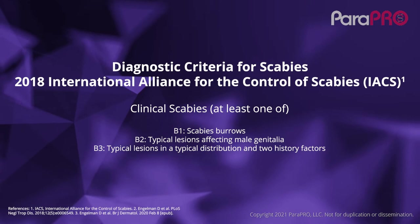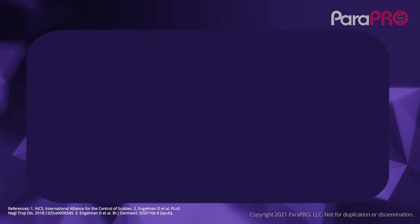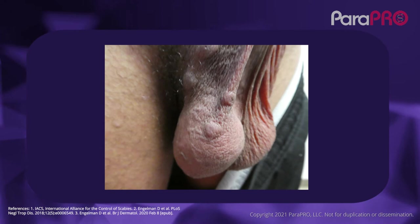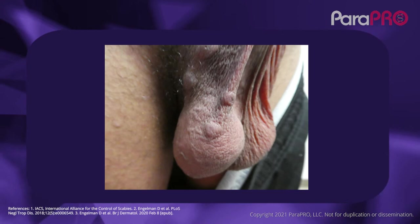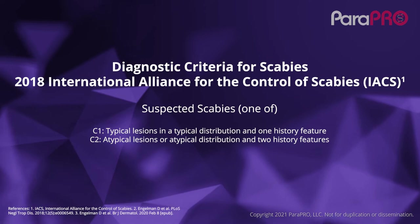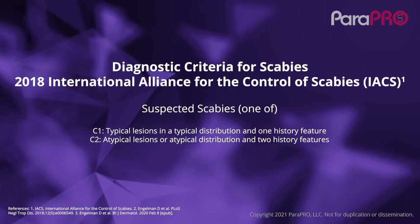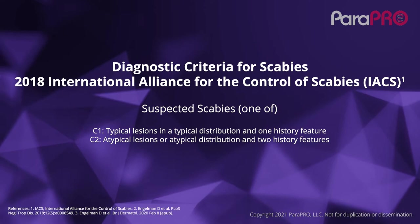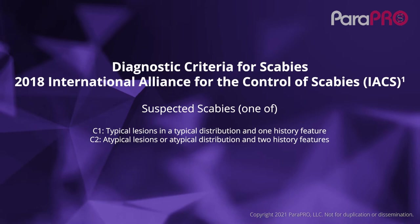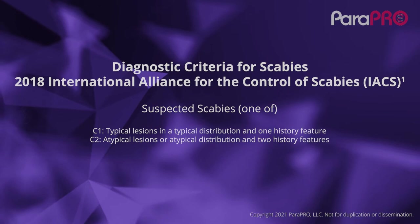A clinical diagnosis of scabies requires either the presence of scabies burrows or typical lesions affecting male genitalia. Looking at the image of the scrotum of a young man, there are several nodules — the typical lesions noted on male genitalia. The third possibility is typical lesions such as excoriated papules in a typical distribution such as the breasts or under the axilla, and two historical features: a history of itching and a history of contact with someone who has scabies. A suspected diagnosis requires only typical lesions in a typical distribution and one historic feature, or non-typical lesions in non-typical distribution and both historic features.